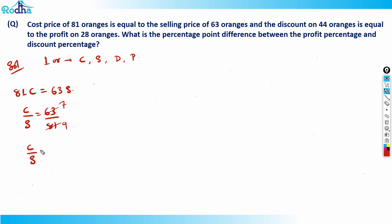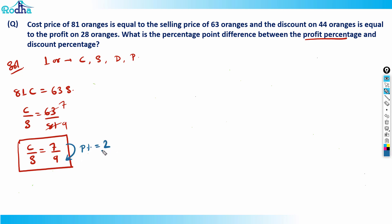So the ratio of cost price to selling price is 7:9. That means cost price is 7 and selling price is 9, so profit is 2. I can straight away calculate the profit percentage: profit percent = 2/7 × 100. Now 1/7 = 14.28%, so 2/7 = 28.56%. That's the profit percentage. Now I also need to calculate the discount percentage, for which I need the marked price.